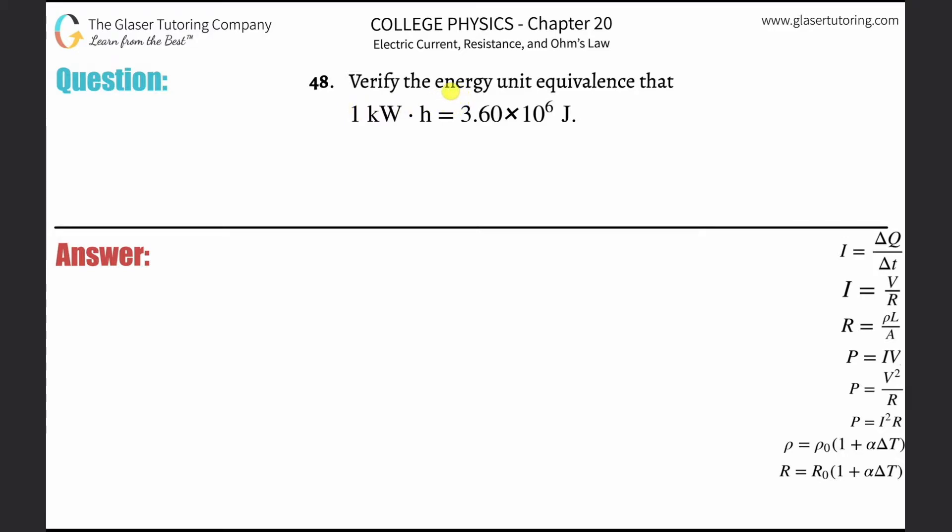Number 48: Verify the energy unit equivalence that 1 kilowatt hour is equivalent to 3.6 times 10 to the 6 joules. All right, so your energy bills come with these units, so if you were ever curious...